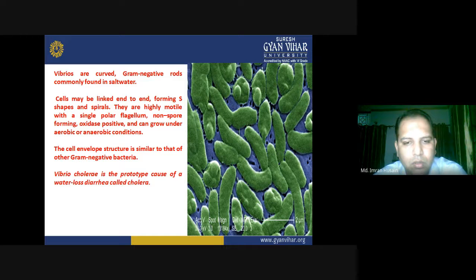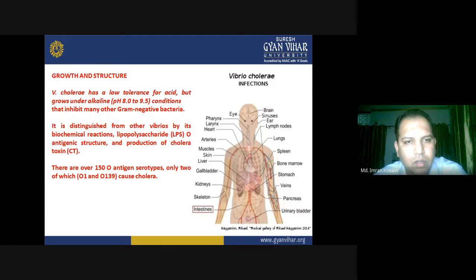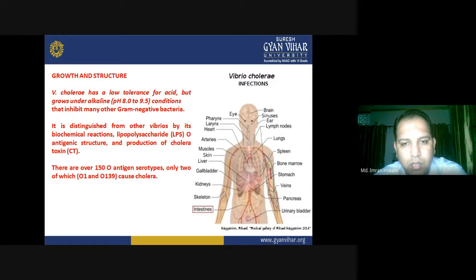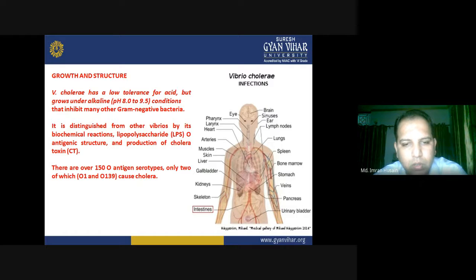Vibrio cholerae is the prototype cause of water-loss diarrhea called cholera. It has low tolerance for acid but grows under alkaline pH — 8 to 9.5 — conditions that inhibit many other gram-negative bacteria. It is distinguished from other Vibrios by its biochemical reactions, lipopolysaccharide (LPS) or O-antigenic structure, and production of cholera toxin (CT). There are over 150 O-antigen serotypes, but only two — O1 and O139 — cause cholera.